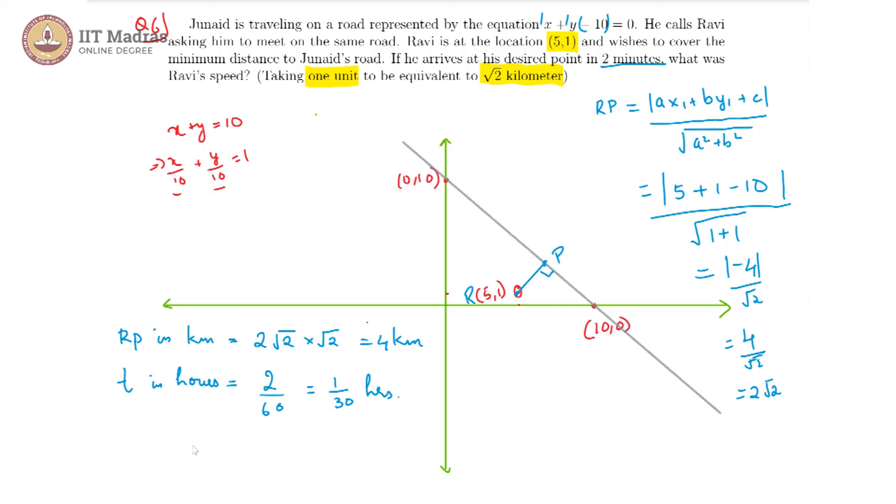The speed would be distance by time, which is 4 by 1 by 30, which gives us 120 kmph, kilometer per hour. This is the speed that Ravi travels at.